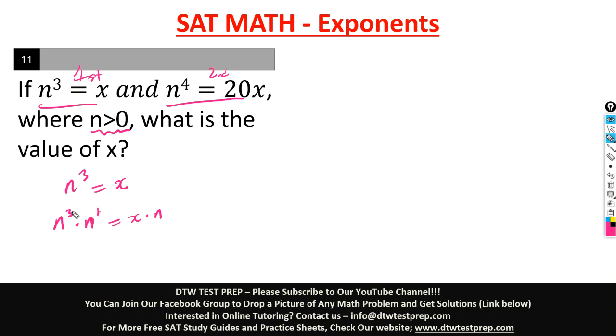When the same base multiply, you add the powers. So you have n 3 plus 1 is 4 equal to xn. So n raised to the power of 4 is equal to xn.